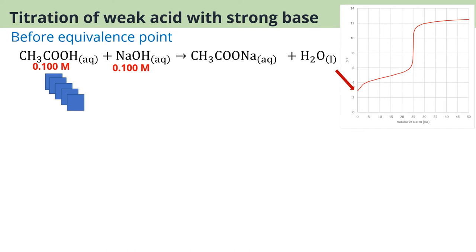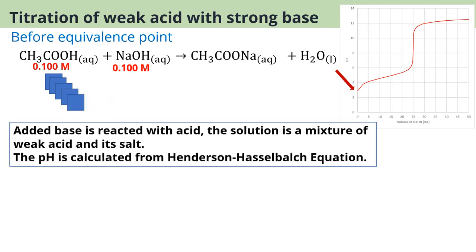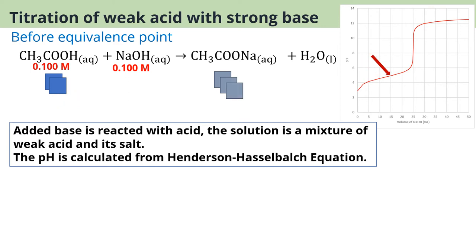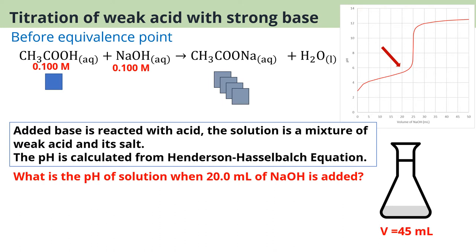Therefore, the pH before equivalence point is calculated from the pH of buffer solution. As we keep adding base, we still have weak acid together with salt, so pH is calculated from the Henderson-Hasselbalch equation. Now, practice problem: what is the pH when 20 ml of sodium hydroxide is added? Total volume is now 45 ml. Please pause the video and come back when you have the answer.